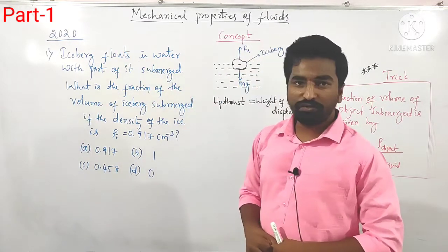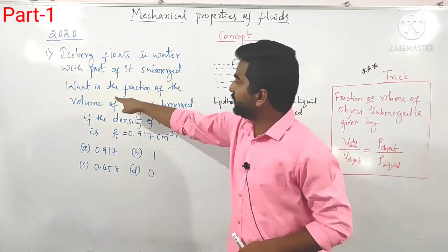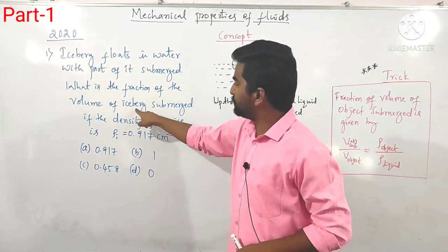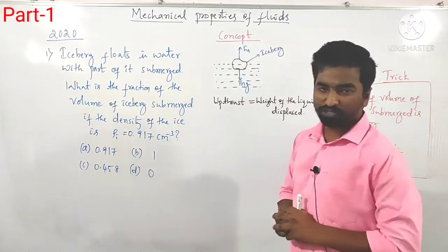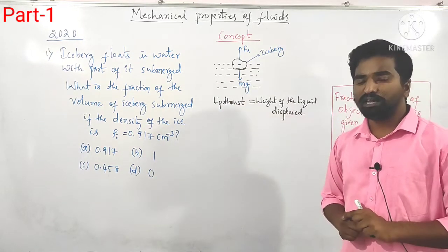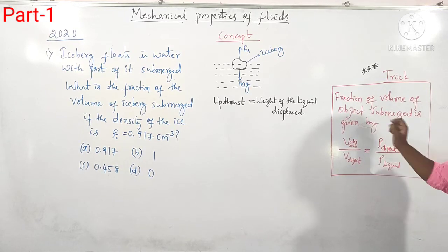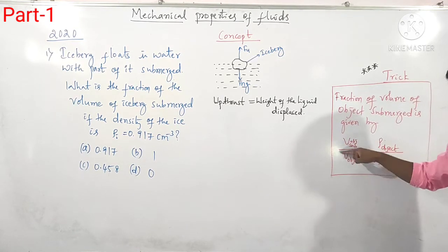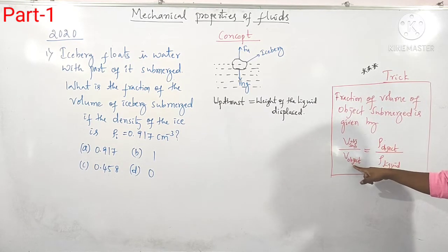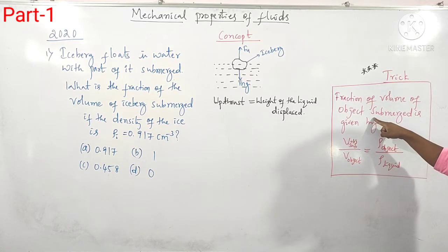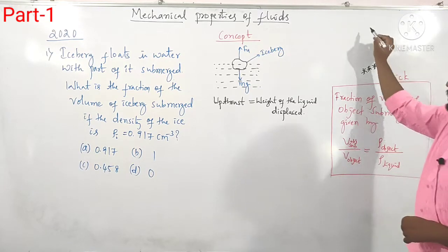The question asked in 2020 CET: an iceberg flows in water with part of it submerged. What is the fraction of the volume of iceberg submerged if the density of the ice is given? They are given four options. The fraction of volume of the object submerged in a liquid is given by the ratio of volume submerged to total volume of the object, which equals density of the object divided by density of the liquid. This is a shortcut used.